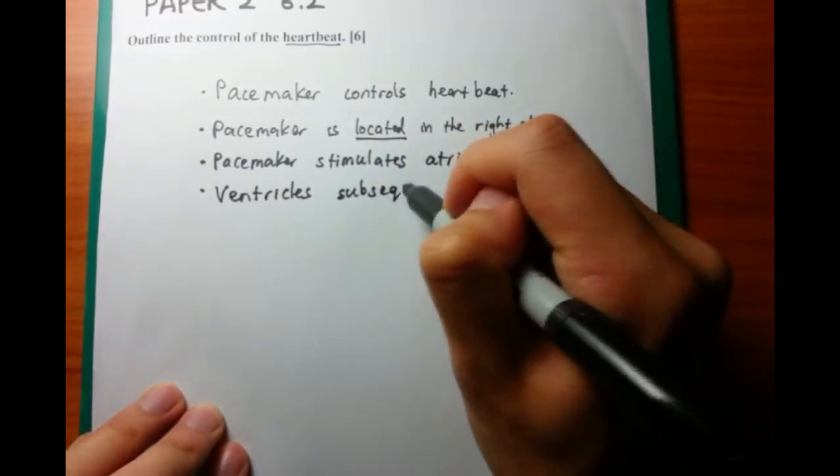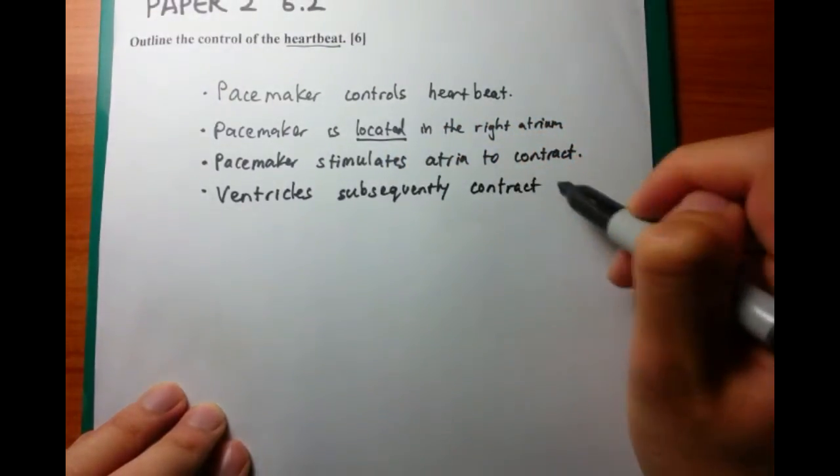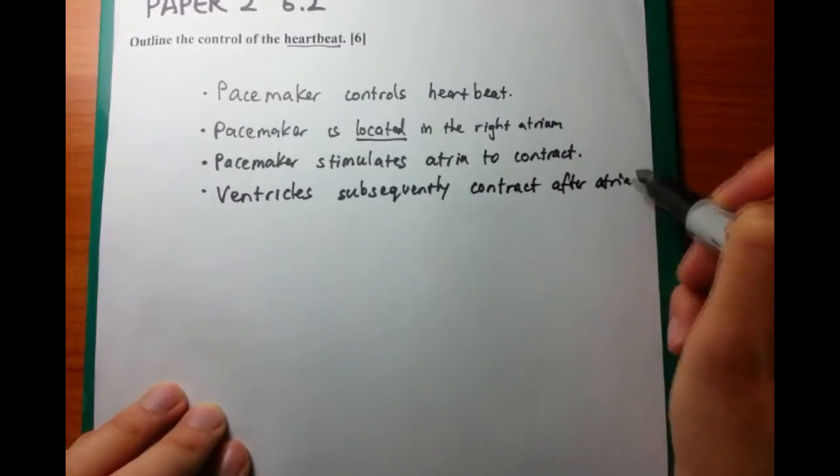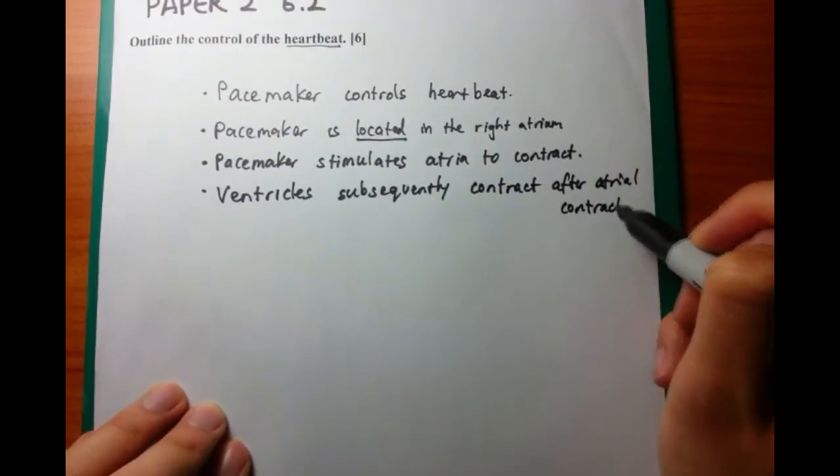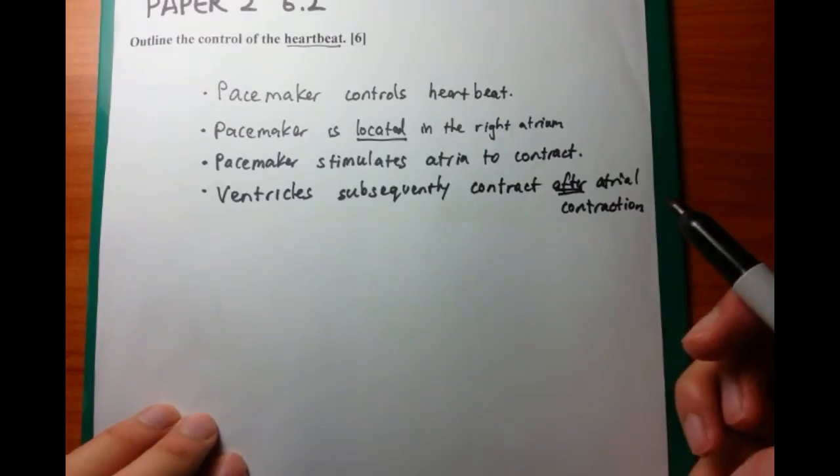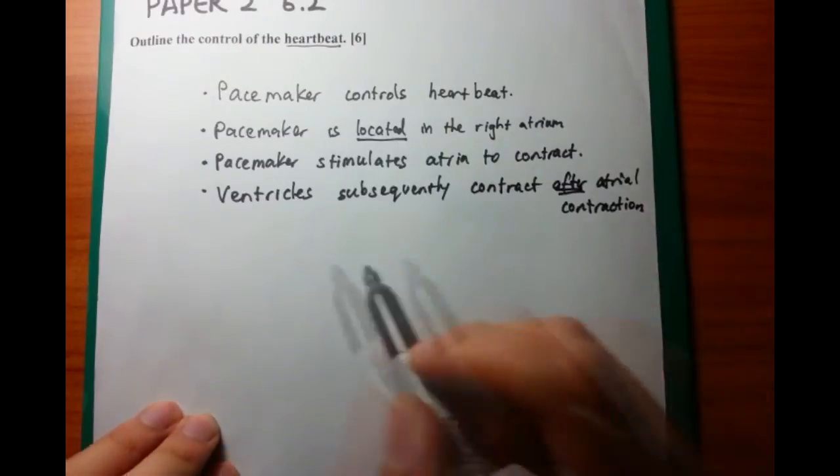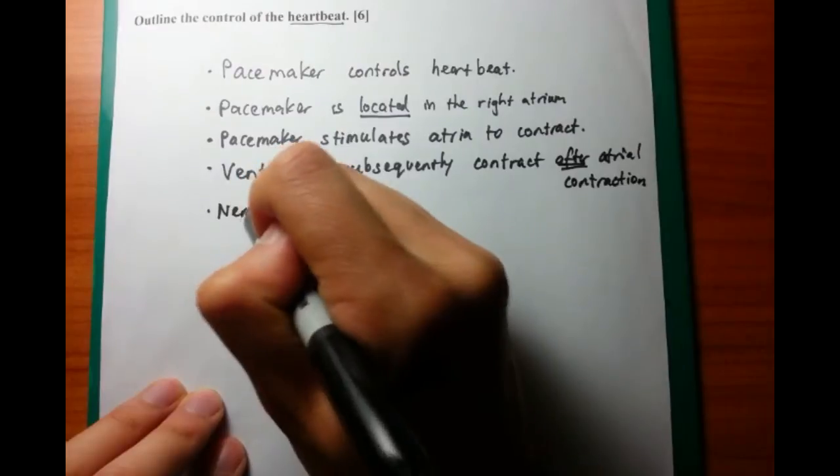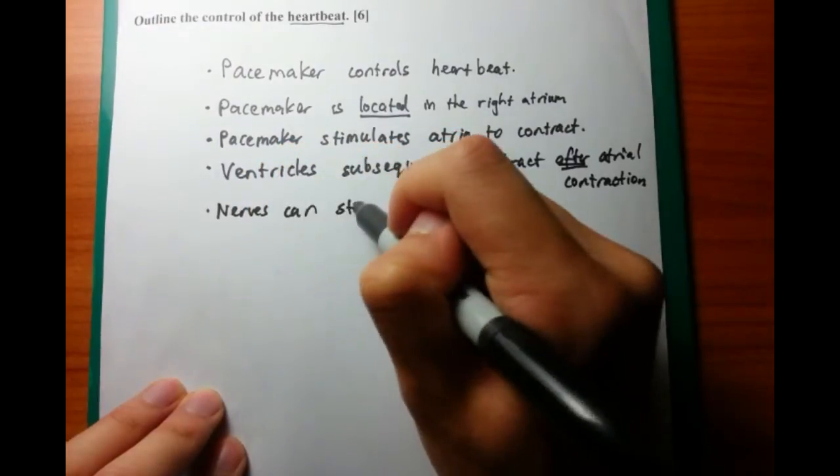Now, after you talk about the ventricles contracting after the atrial contraction, you want to talk about what things can increase the heartbeat and what things can decrease it. There are two main things. First of all, it is nerves. Nerves are very important and can stimulate the heart.